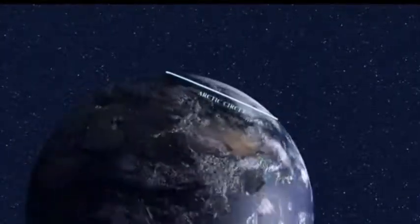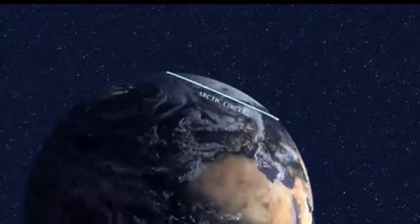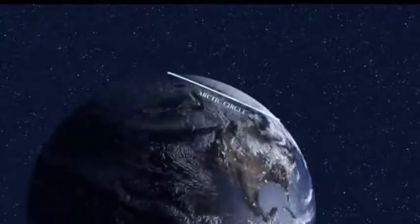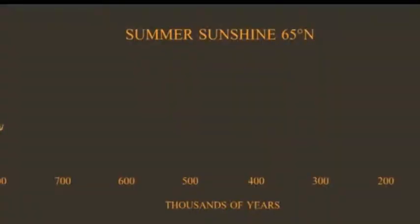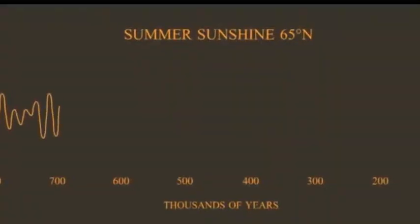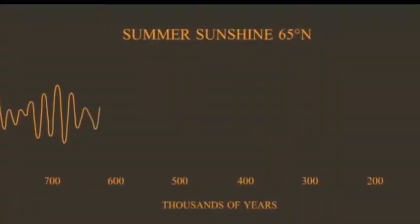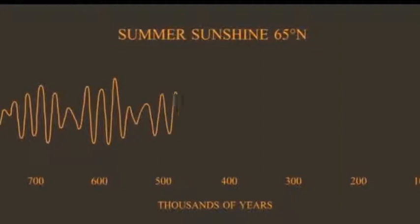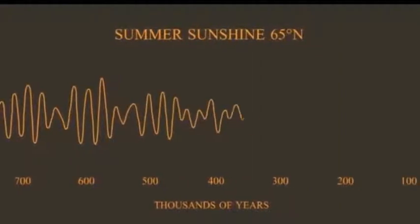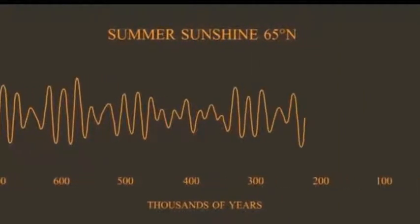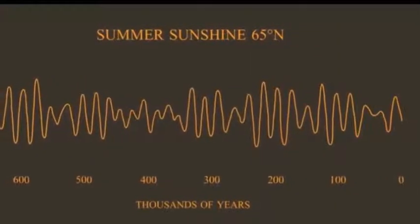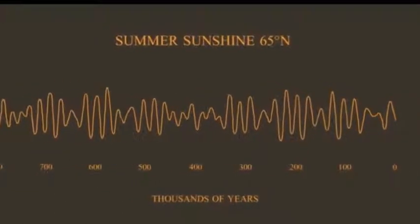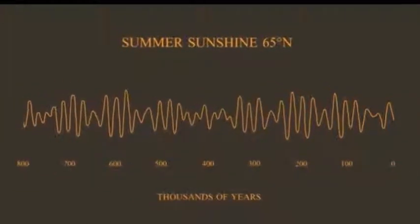This depends on how much sunlight there is during the summer. You might think that this doesn't change, but it does. Milankovitch showed that over hundreds of thousands of years, the amount of summer sunlight can shift plus or minus 15%. This can bring ice ages. This can end ice ages.